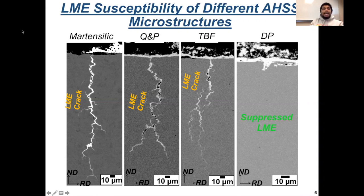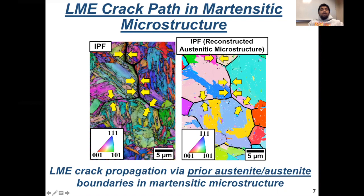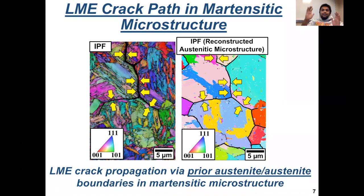So we had to investigate the crack path in these high LME-sensitive steels. We investigated the tip of the LME crack that was formed in the fully martensitic microstructure. Here is the EBSD inverse pole figure, and the crack is indicated by the yellow arrows. The EBSD IPF tells us that there are many boundaries in the martensitic microstructure. To determine which boundaries cracked, we used the EBSD IPF of the martensitic microstructure to reconstruct the prior austenite microstructure — the austenite present before the martensitic transformation — and we observed that the crack boundaries coincided exactly with the prior austenite grain boundaries.